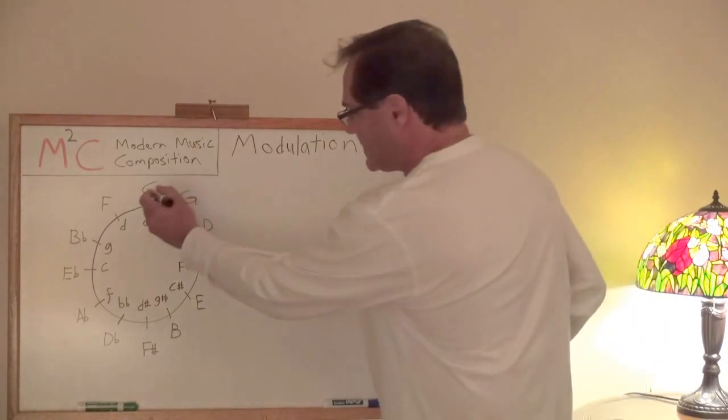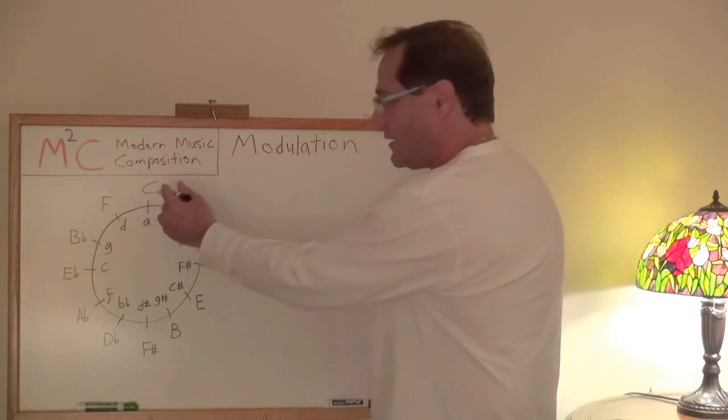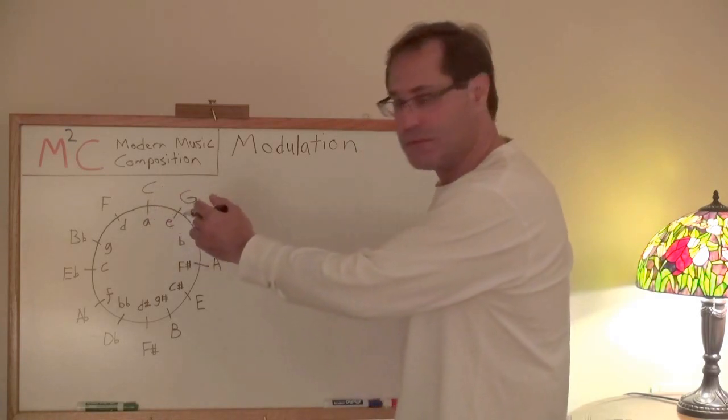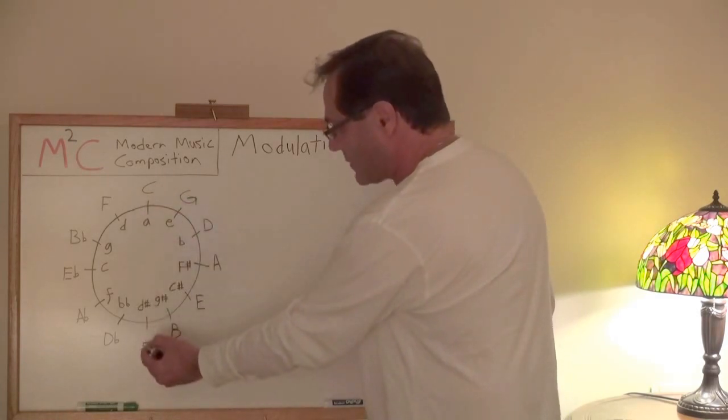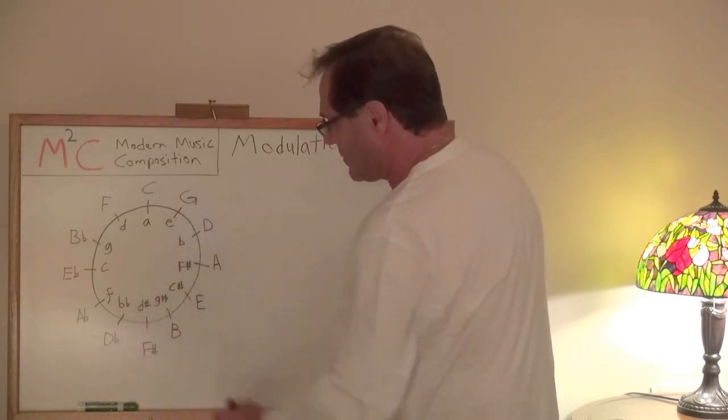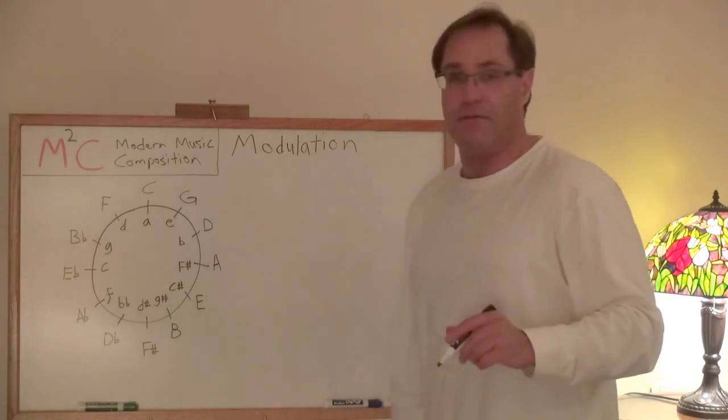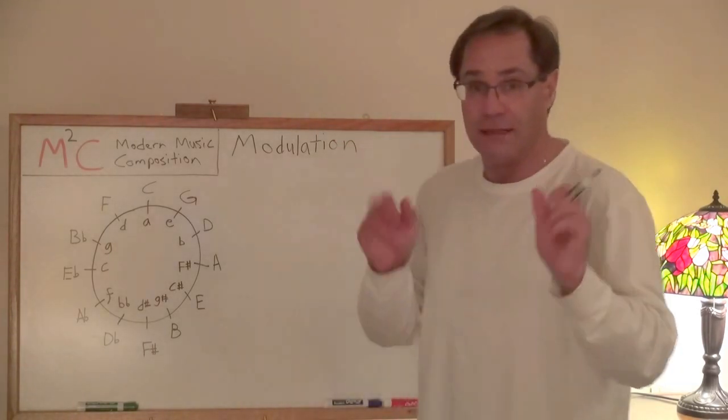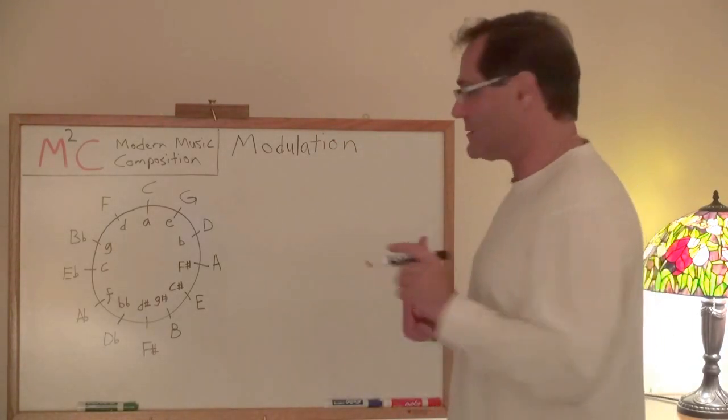So if I'm in the key of C and I'm doing this dominant seventh tritone substitution, I know for a fact I'll be modulating into F-sharp major. If I'm in the key of G, I know for a fact I'll be modulating into D-flat major. Let's do just that. Let's do an example.